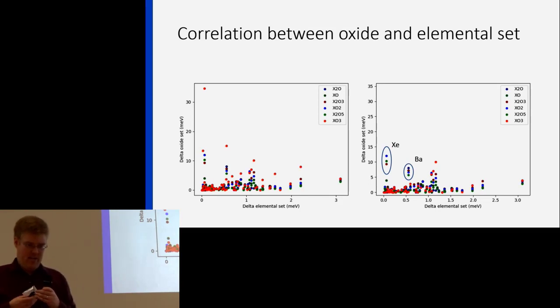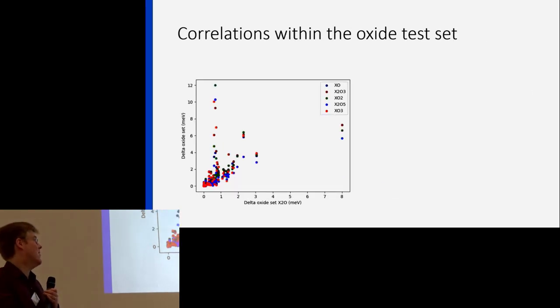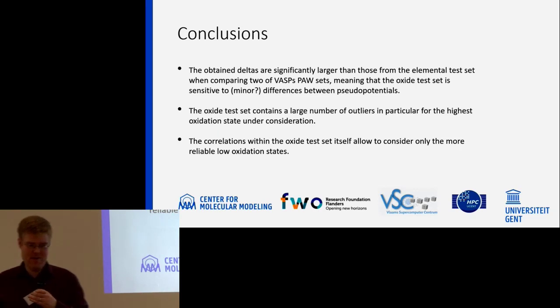And this is basically the main conclusion which we have up to now. That first of all our definition of delta is somehow transferable to more exotic electronic chemical environments like this oxide test set. And second that the oxide test set is more sensitive to even really subtle differences in pseudo potentials like those in between the two VASP PAW sets. And with respect to the time I am now out of time which means I will just throw my conclusions here. I skipped some part of the talk and thank you for your attention. Thank you very much.